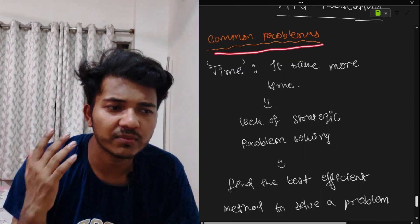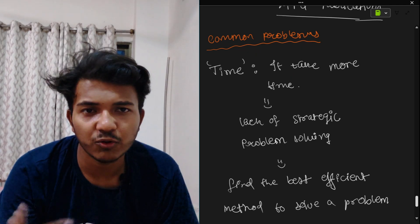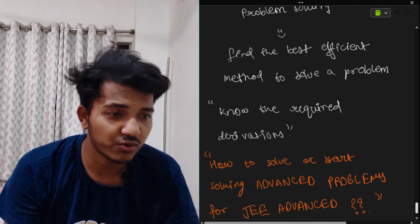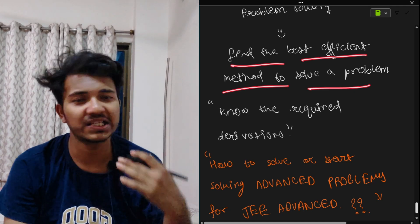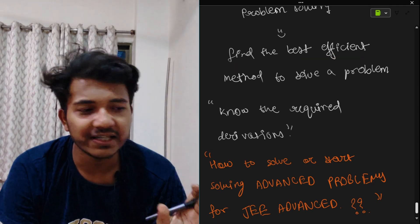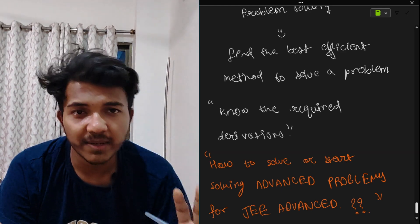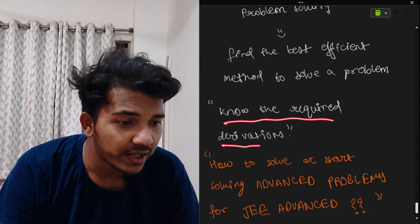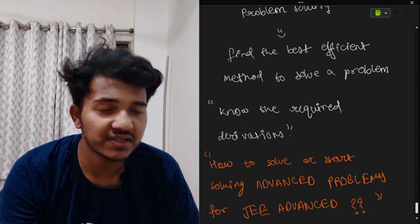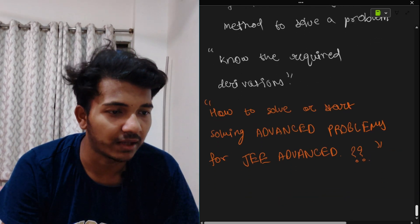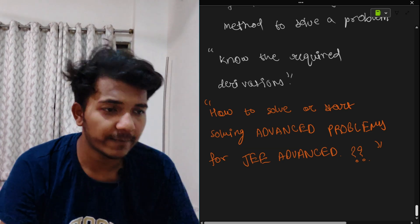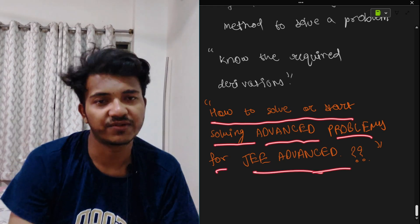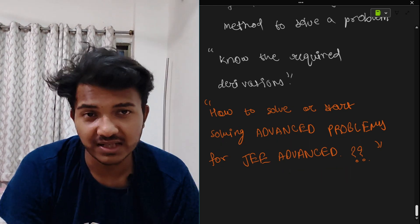Now let's talk about common problems. Problem: questions take too much time, questions are very lengthy. Reason: lack of strategic problem solving. Solution: find the most efficient method to solve a problem. For any question, there may be multiple methods — identify the most efficient one. Also, know the required derivations — remember them during your JEE preparation. This is a very important thing. We will discuss how to solve and start solving advanced problems for JEE Advanced in our next video.